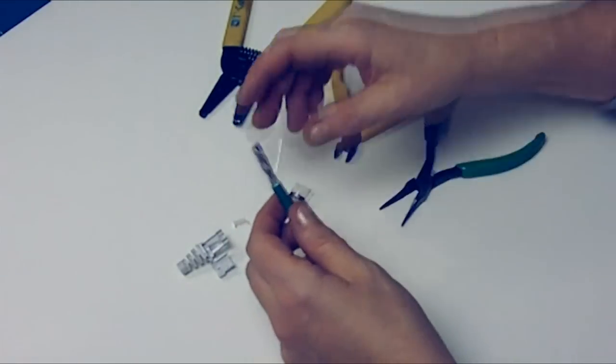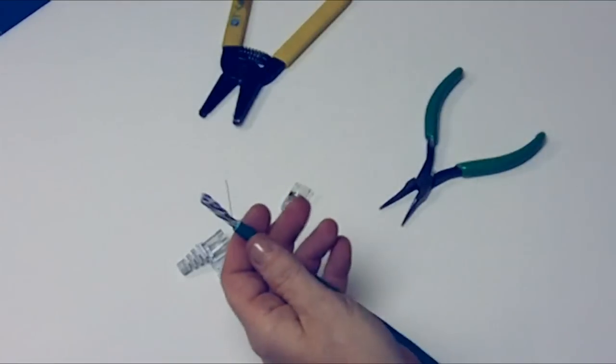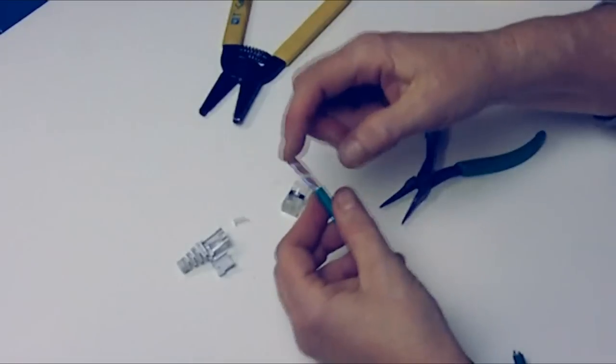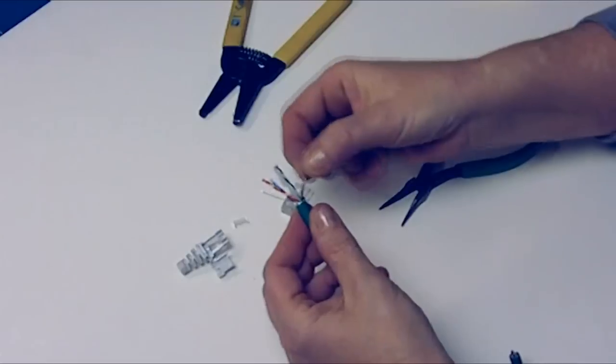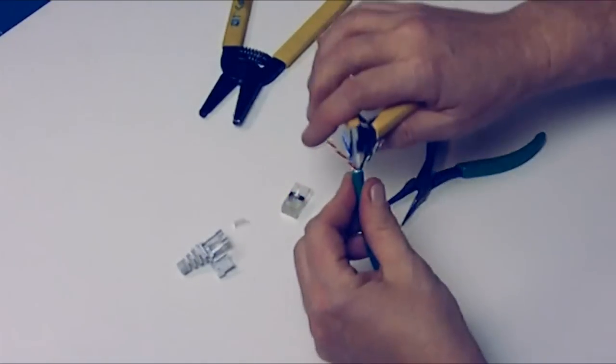Trim the excess foil. Separate twisted pairs and the drain wire. Trim off the fill fibers.